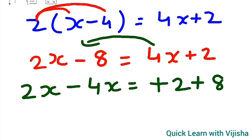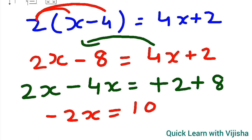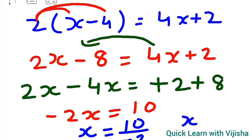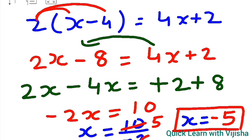Now 2 minus 4 — the greater number is 4 which carries the minus sign — gives minus 2x. And 2 plus 8 gives 10. So minus 2x equals 10. Dividing both sides by minus 2 gives x equals 10 upon minus 2, which is minus 5. Don't forget to write the minus sign — x equals minus 5.